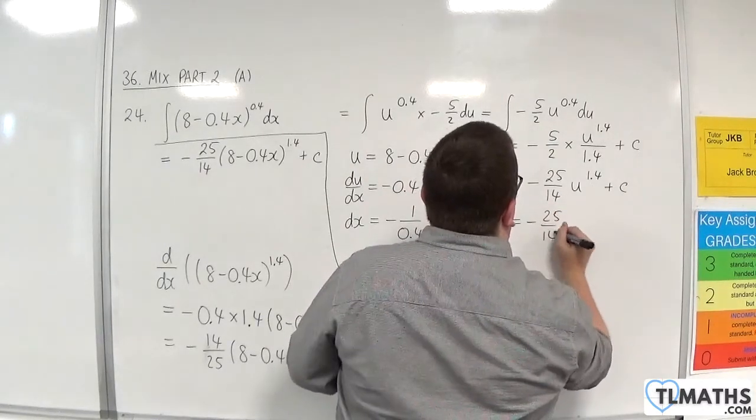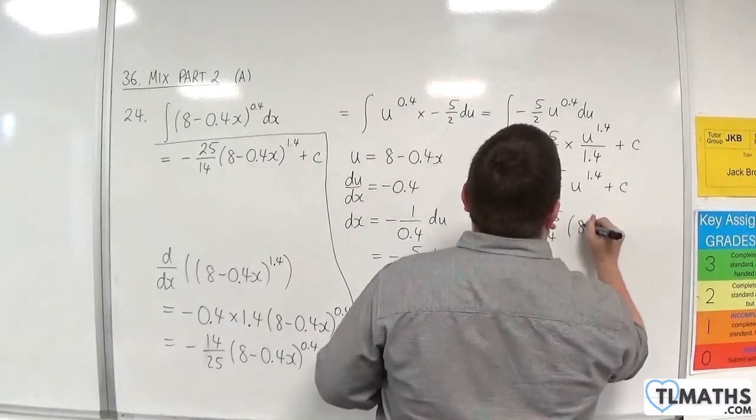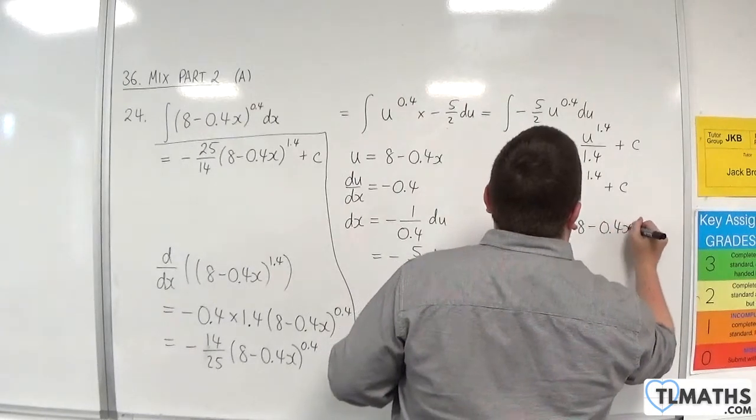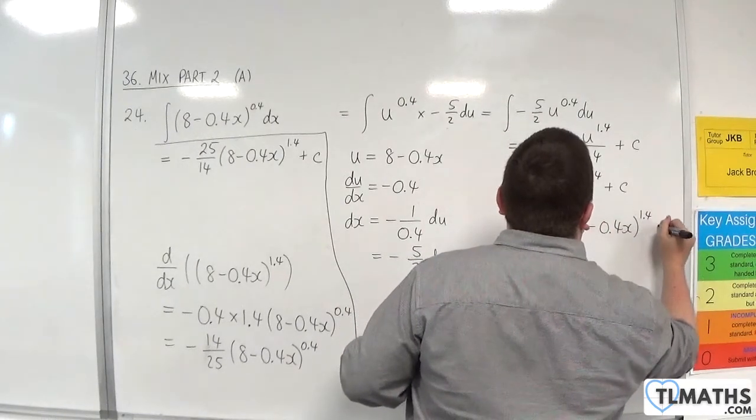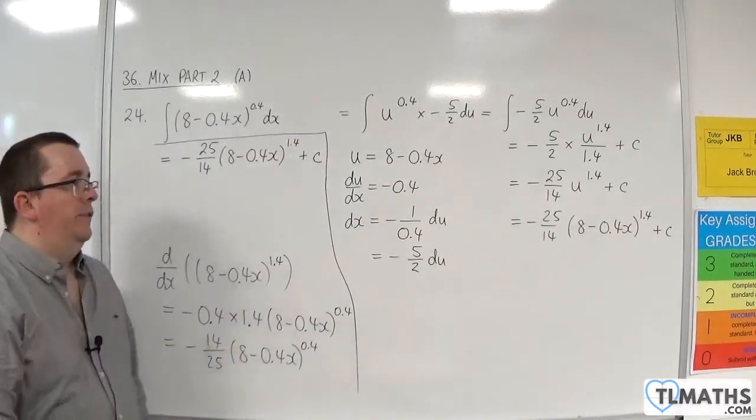So let's replace the u back with 8 take away 0.4x. And we have our answer.